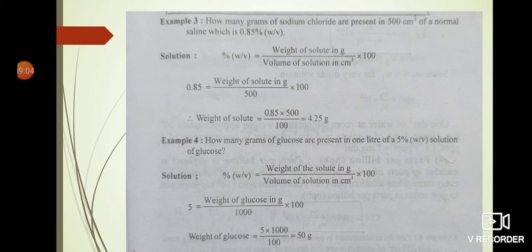Applying the weight/volume percent formula: 0.85 = weight of solute (g) / 500 cm³ × 100. Rearranging: weight of solute = 0.85 × 500 / 100 = 4.25 gram. Therefore, there are 4.25 grams of sodium chloride present in normal saline.